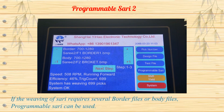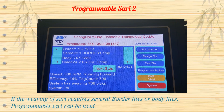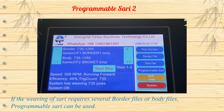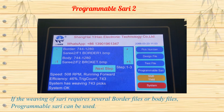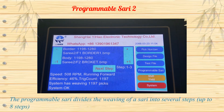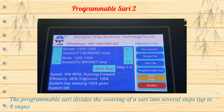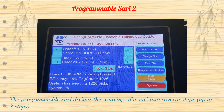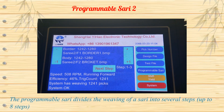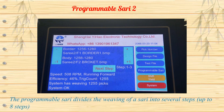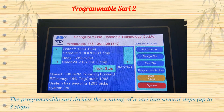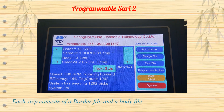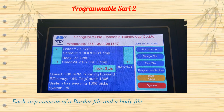If a weaving of sari requires several border files or body files, programmable sari can be used. The programmable sari divides the weaving of a sari into several sets, up to eight steps. Each set consists of a border file and a body file.